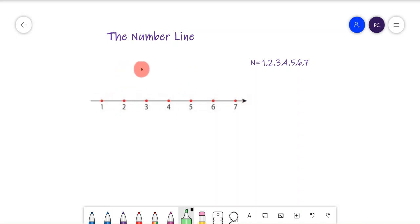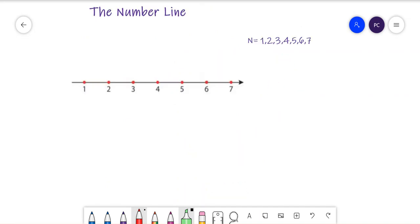When we're adding, we're moving forward on the number line. For example, if we wanted to add 2 plus 2, we start at 2. If we add 2, we go 1, 2, and we end up here on 4. If we're adding, we're moving to the right on the number line. If we're subtracting, we're moving to the left on the number line.